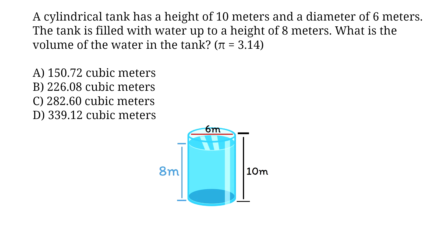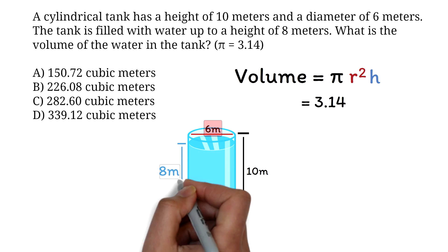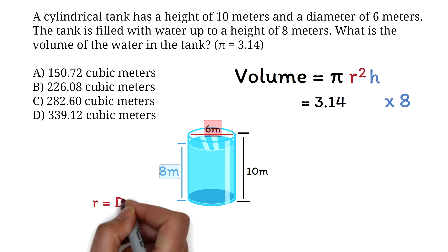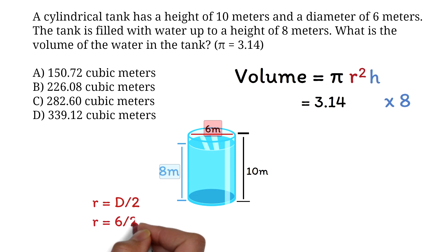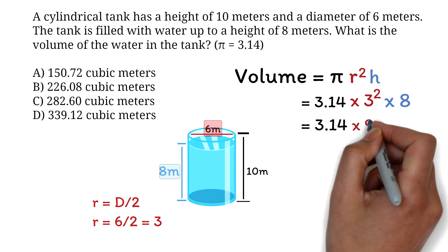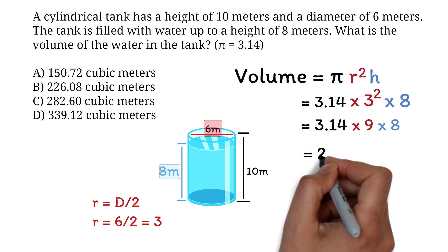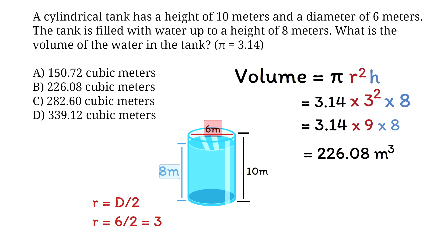Liquids take the shape of the container they fill, so the diameter of the water will be the same as that of the cylindrical tank — 6 meters. The formula for finding the volume is pi r squared h. Pi is 3.14, the height of water is 8 meters. The radius is diameter divided by 2, so 6 over 2 equals 3. Substituting: 3.14 times 3 squared times 8. Since 3 squared is 9, we get 3.14 times 9 times 8, which equals 226.08 cubic meters. The correct answer is B, 226.08 cubic meters.